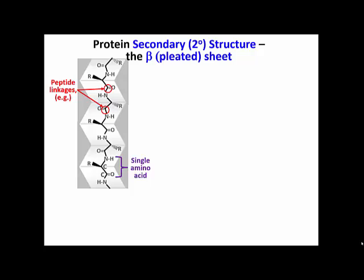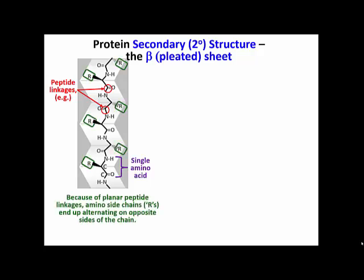The peptide linkages are planar. That is, because they don't involve a single bond around which every atom can rotate, but rather three bonds, a double bonded oxygen and a bond between carbon and nitrogen, that linkage forms a plane. So the entire structure of the polypeptide takes on a planar shape, and the result is that the side chains of the amino acids alternate from one side of the pleat, or plane, to the other.